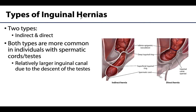There are two types of inguinal hernias: indirect and direct, and these are often difficult to differentiate on clinical exam. Both types can happen to any individual but are more common in individuals with spermatic cords and testes due to the relatively larger size of the inguinal canals resulting from the descent of the testes into the scrotum. Ovaries do not traverse the inguinal canal, whereas the testes do.